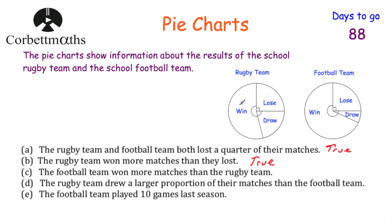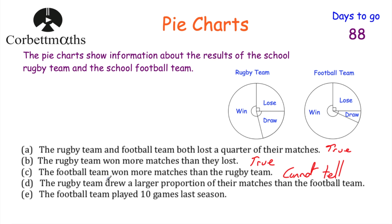Statement three: the football team won more matches than the rugby team. The football team has a bigger 'win' sector than the rugby team, but we don't know how many matches each team played. For instance, the rugby team may have played 400 matches and won over half — that's more than 200 wins — whereas the football team may have only played 40. Because we don't know the total matches played, we cannot tell.